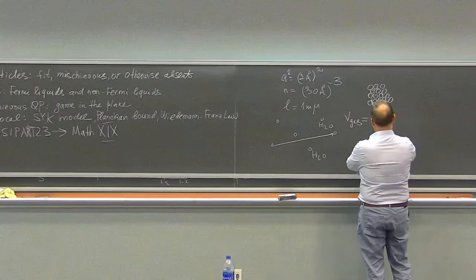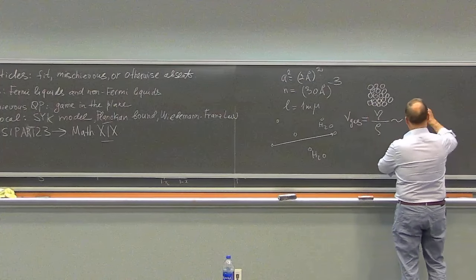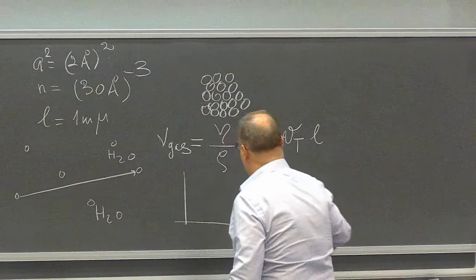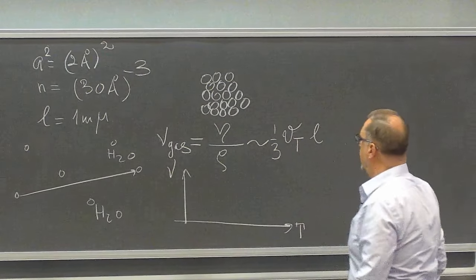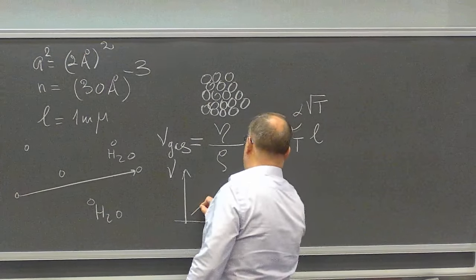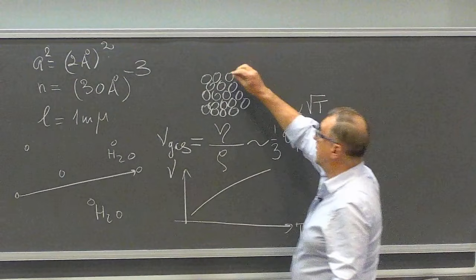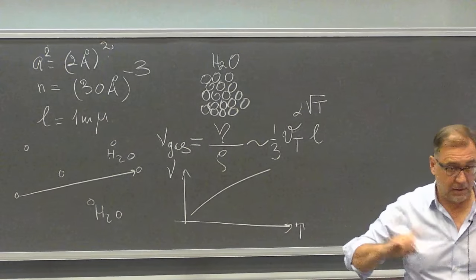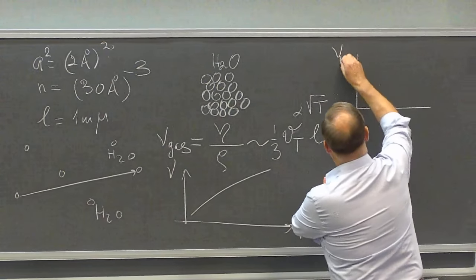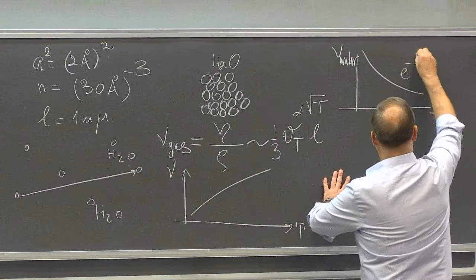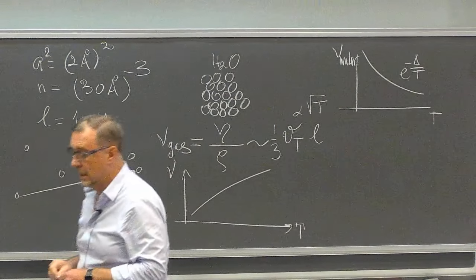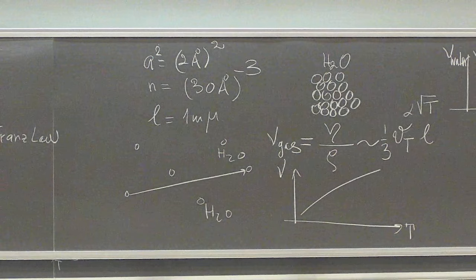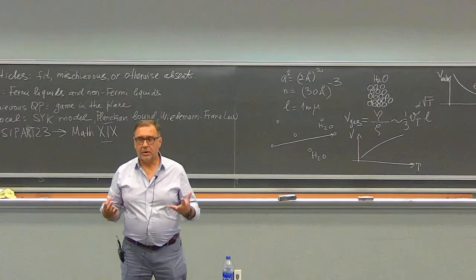For example, from the mean free path formula I can calculate the kinematic viscosity of gas — roughly v_rms times mean free path divided by three — and for air this hits right on the mark, scaling as square root of temperature. But for water as a liquid, if I use the intermolecular separation as the mean free path, I'll fail: the actual viscosity of water decreases with temperature exponentially. Everything we know about classical liquids comes from analogy with solids — for instance, the Bridgman formula for thermal conductivity uses a model where the liquid is replaced by a cubic crystal.